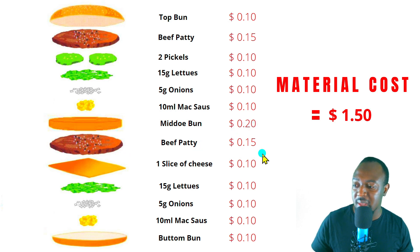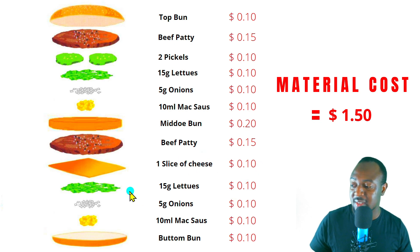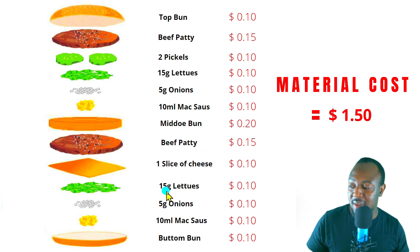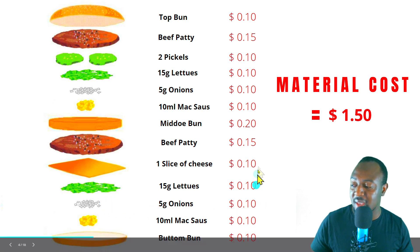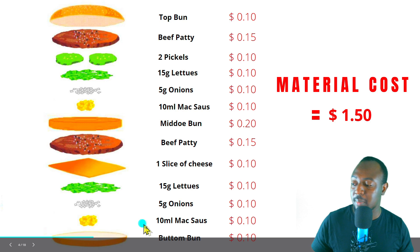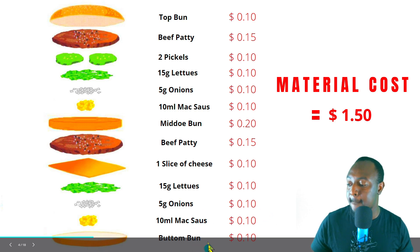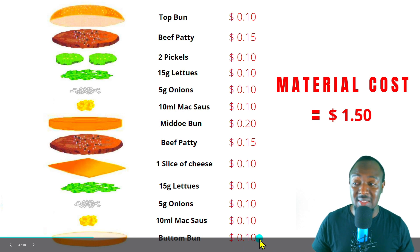We have another beef patty at 15 cents, one slice of cheese at 10 cents, another 15 grams of lettuce at 10 cents, five grams of onions at 10 cents, another 10 ml of Big Mac sauce at 10 cents, and the bottom bun at 10 cents.